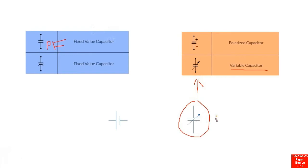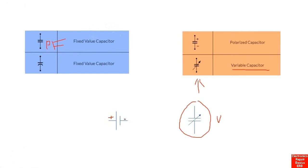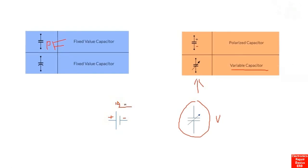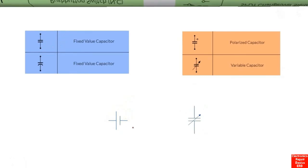You should differentiate between a battery and a capacitor. This symbol is for a battery cell — for example, a sealed battery of 12 volts or 9 volts.